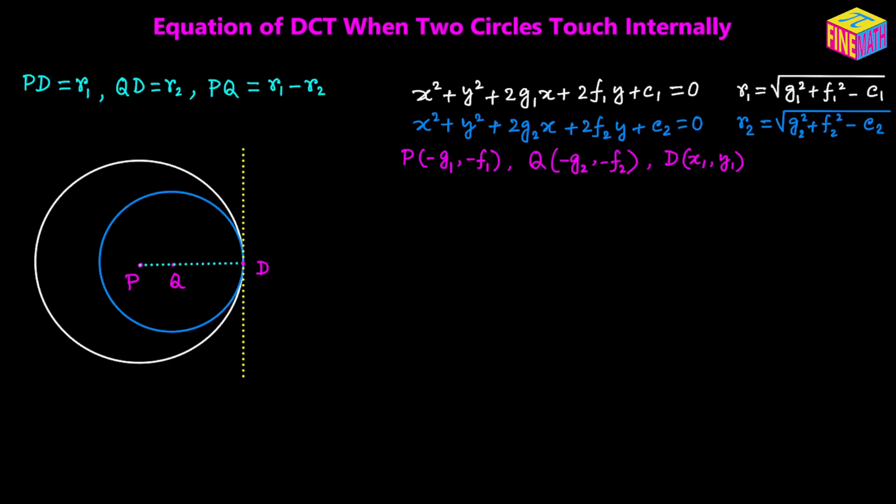I am not using the absolute value sign here because we know R sub 1 is greater than R sub 2 from the diagram, so R sub 1 minus R sub 2 will be a positive quantity. Therefore PQ equals R sub 1 minus R sub 2. Also, PD will be perpendicular to the direct common tangent — from the theorem of circles, the radius is always perpendicular to the tangent at the point of contact.